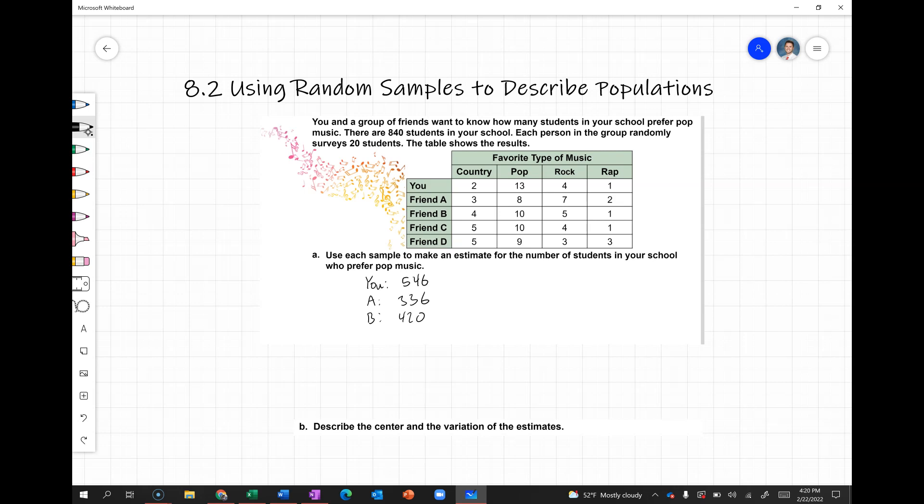And then for friend C, same thing, 10. So that's another 420. And then friend D was 9.